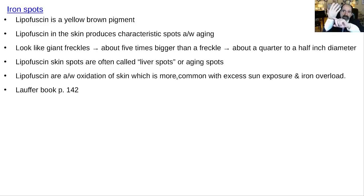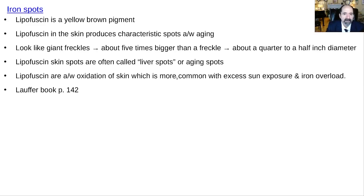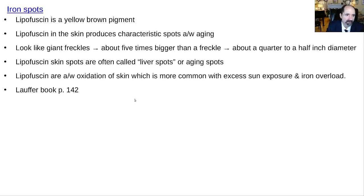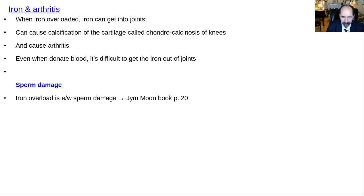These are lipofuscin spots — also called aging spots or liver spots — you've seen them on a person's hand or face; they look like giant freckles, about half an inch in diameter. They're associated with excessive sun exposure, but also with being iron overloaded, which tends to make them a lot worse. So iron accelerates your aging.